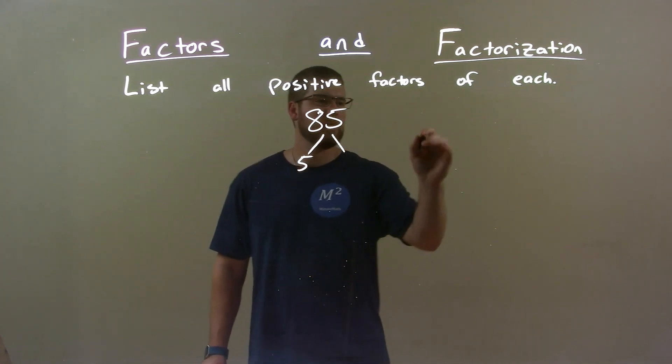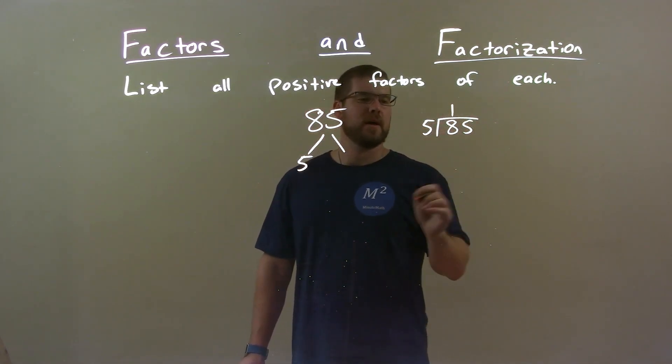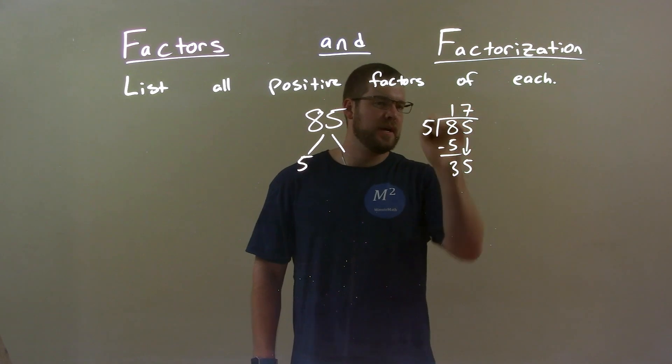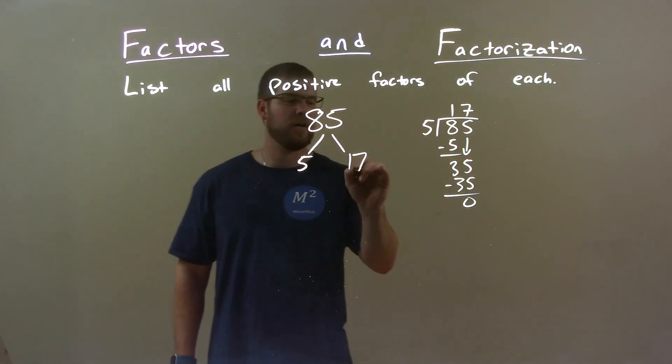But how many times? Well, let's do long division just to find out. 85. Five and eight, one times. One times five is five. Subtract it, gives a three. Bring down the five. Five goes into thirty-five seven times. We have thirty-five here, zero. So, seventeen is my other number.